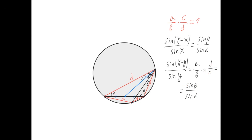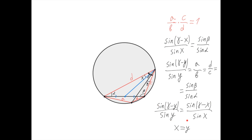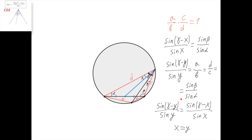Meaning that sine of gamma minus y over sine of y equals sine of beta over sine of alpha, but it also equals sine of gamma minus x over sine of x. And therefore, cotangent of y equals cotangent of x.